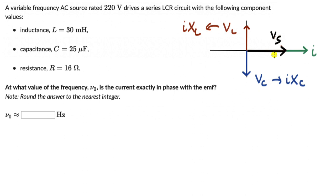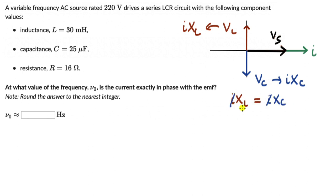When VL equals VC, they cancel each other off and the supply voltage is just the same as the voltage across the resistor. At this frequency, the circuit is behaving as if it's a purely resistive circuit. Canceling the current I from both sides gives us XL equals XC — the inductive reactance equals the capacitive reactance.